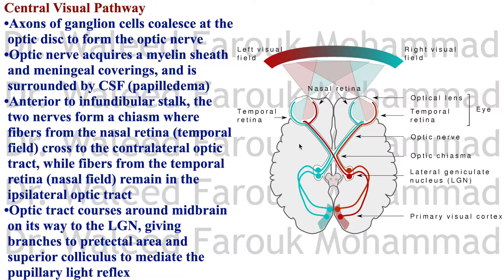Anterior to the infundibular stalk of the pituitary gland, the two optic nerves form a chiasm, through which the fibers from the nasal retina cross. The nasal retina receives the temporal (lateral) field, while the temporal retina receives the nasal (medial) field. At the chiasm, fibers from the nasal retina of both eyes cross to the contralateral optic tract, while temporal retina fibers remain ipsilateral.